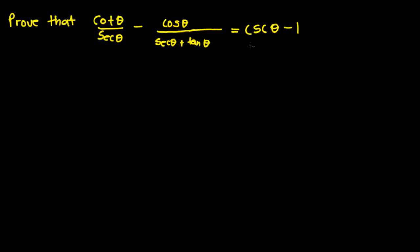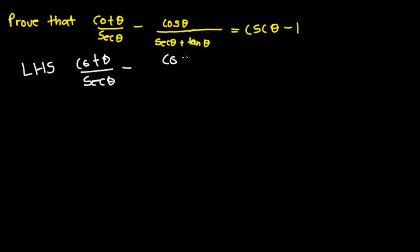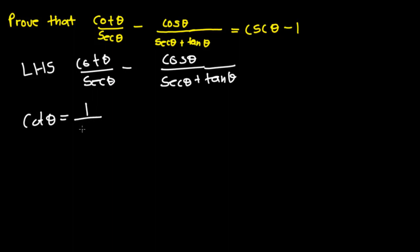We are going to manipulate the left-hand side of the equation to see if we can get what is on the right-hand side. The left-hand side is giving us cot theta all over sec theta, minus cos theta all over sec theta plus tan theta. From here we can rewrite cot theta as 1 over tan theta.